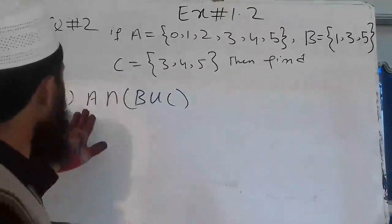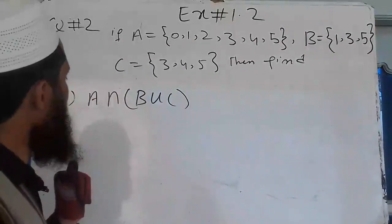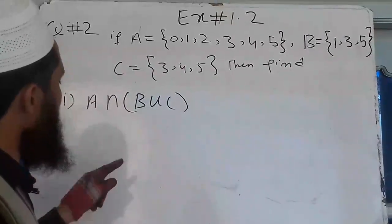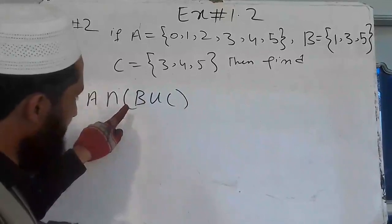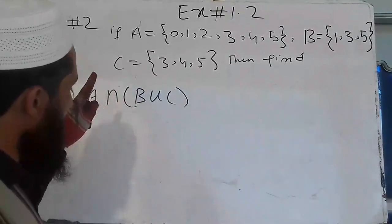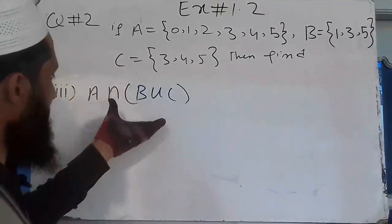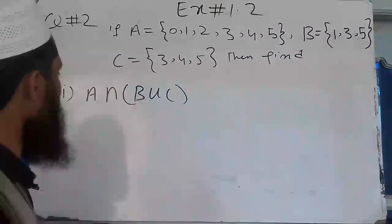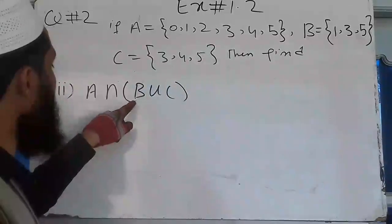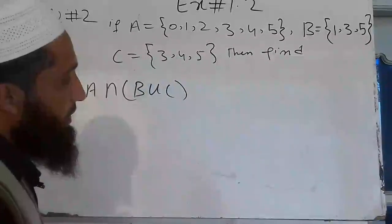The question is A intersection B union C. In mathematics, brackets have different meanings — these are braces, which is the type used for sets in roster form.